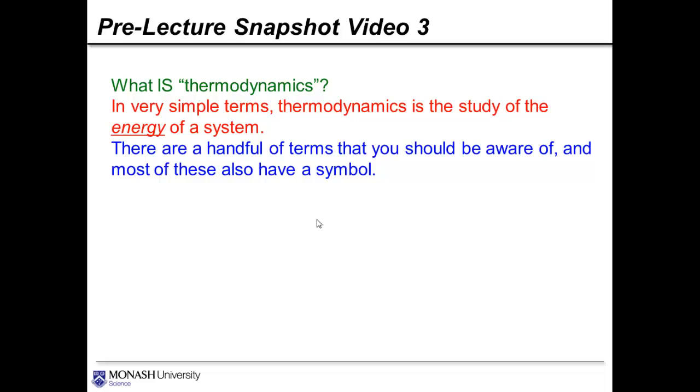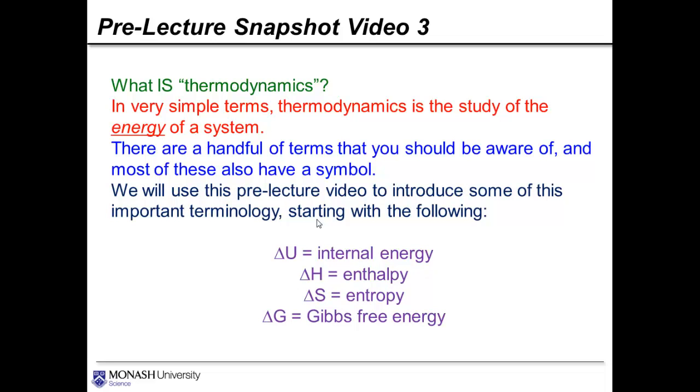So as I mentioned there are a handful of terms that you should be aware of and most of these also have a symbol. We'll take a look at a few throughout this video. The internal energy is the first one. It actually has the symbol U. We often or most commonly talk about the change in the energy of a system. So more often than not you won't be talking about a direct measurement of U but a change in the value of U or change in the internal energy. And you will see that these other state functions of enthalpy, entropy and Gibbs free energy are all expressed in a similar sort of fashion.